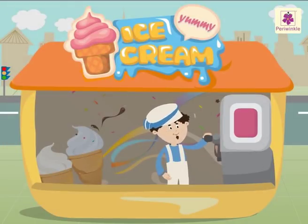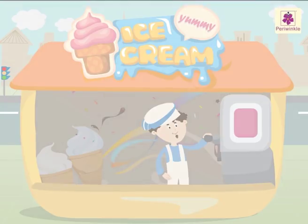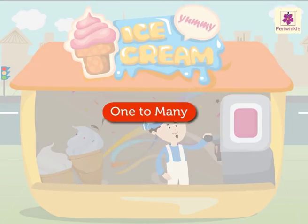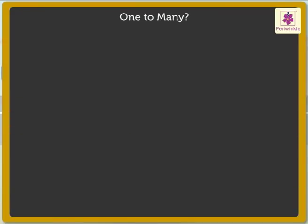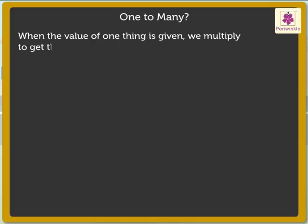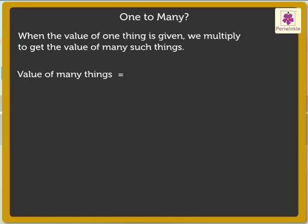Look, we are at an ice cream shop. Let us learn one too many at this shop. What do we mean by one too many? When the value of one thing is given, we multiply to get the value of many such things. Thus, value of many things is equal to number of things into value of one thing.